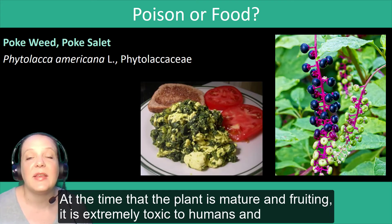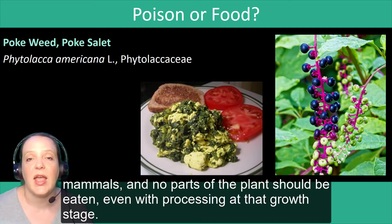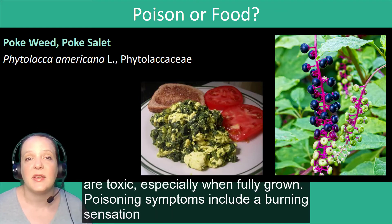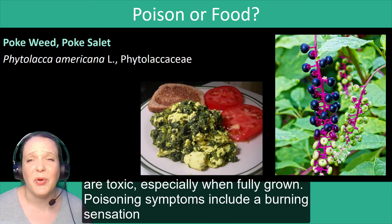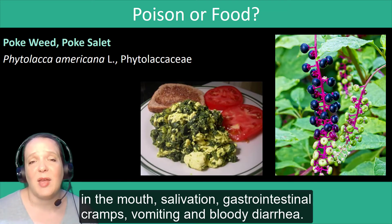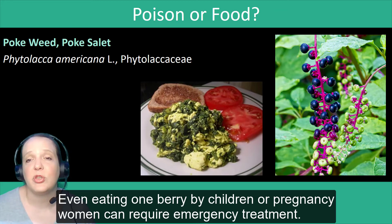At the time that the plant is mature and fruiting, though, it is extremely toxic to humans and mammals, and no parts of the plant should be eaten, even with processing at that growth stage. The highest levels of toxicity are in the taproot, and all parts of the plant are toxic, especially when fully grown. Poisoning symptoms include a burning sensation in the mouth, salivation, GI cramps, vomiting, and bloody diarrhea. Even eating one berry by children or pregnant women can require emergency treatment.